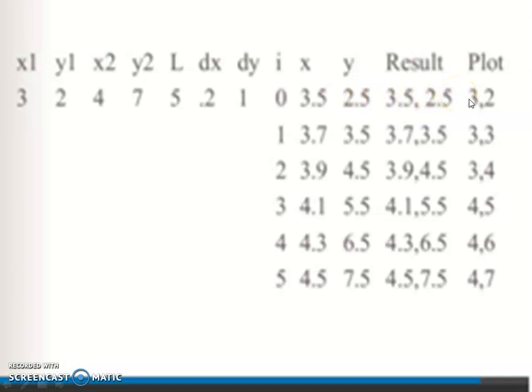Second case: x1 + dx is 3.5 + 0.2 = 3.7. Then 3.9, 4.1, 4.3, 4.5. y values: y1 + dy is 2.5 + 1 = 3.5, then 4.5, 5.5, 6.5, 7.5. These are the coordinates: 3.7,3.5; 3.9,4.5; 4.1,5.5; 4.3,6.5; 4.5,7.5.